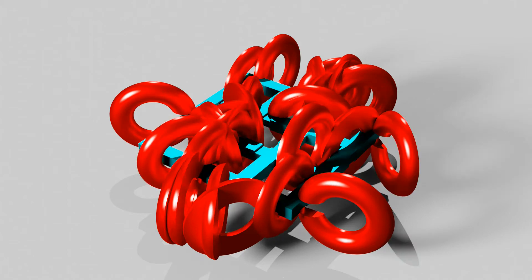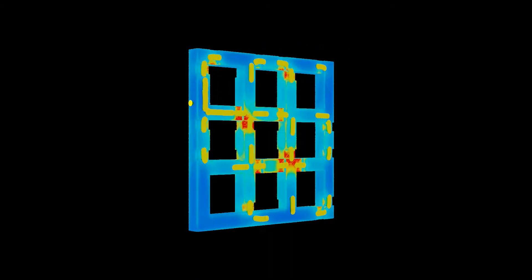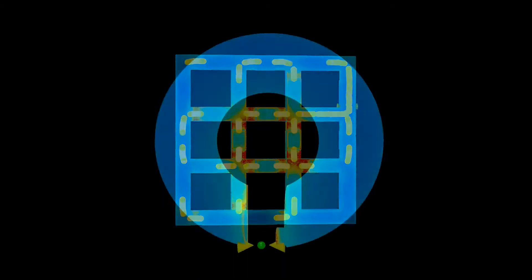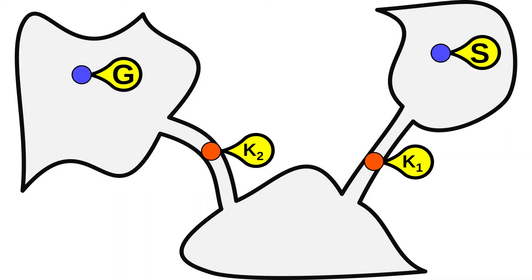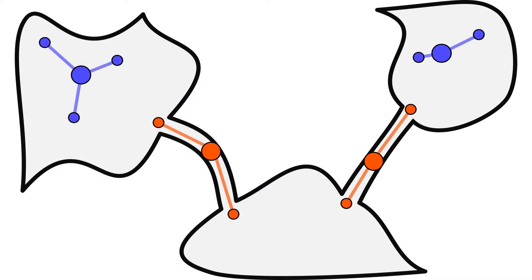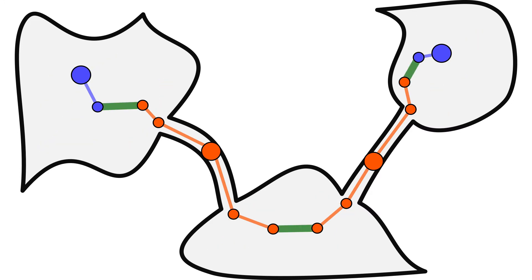Our approach discovers key configurations in narrow tunnels based on heuristics that pair up geometric features. We then bloom local solution trees rooted at each key configuration in parallel and connect the trees to find a final solution path that navigates the tunnels.